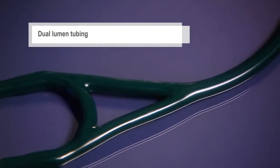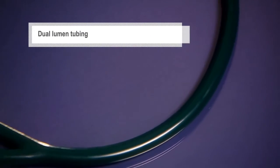The dual lumen tubing is actually two tubes in one, designed to eliminate rubbing noises.